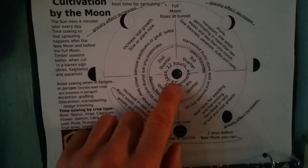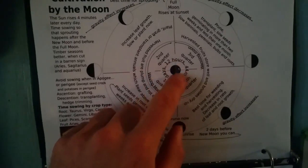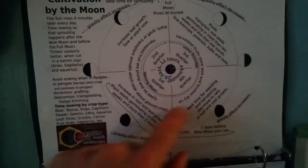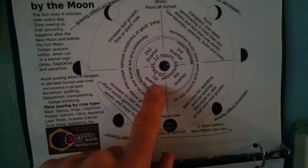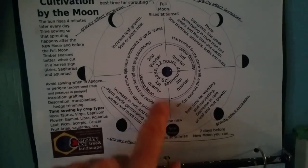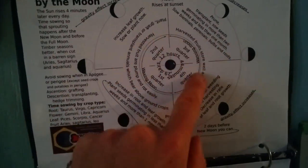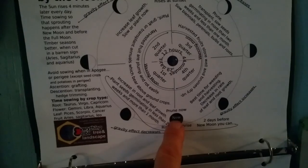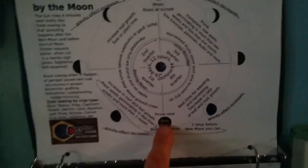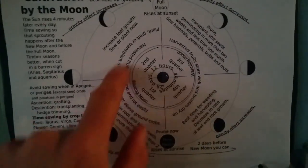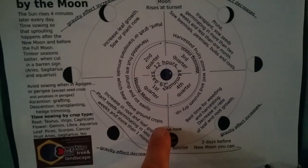So, here it talks about 29 days, 12 hours, 44 minutes for the moon to do a complete phase from first quarter, second quarter, third quarter, and fourth quarter back to new moon. Here's the new moon. This calendar shows what kind of cultivation things we can be doing.